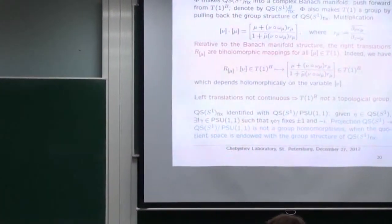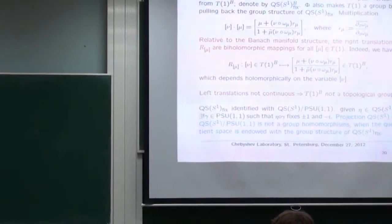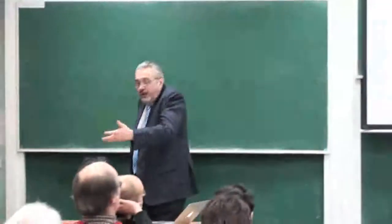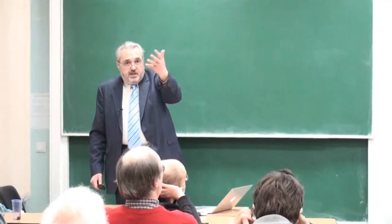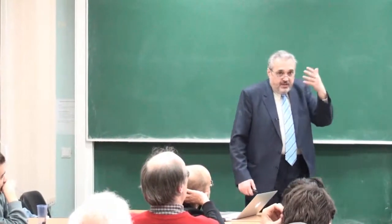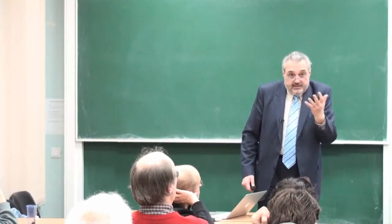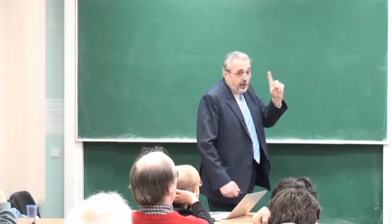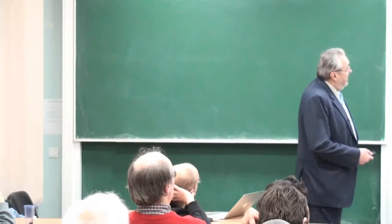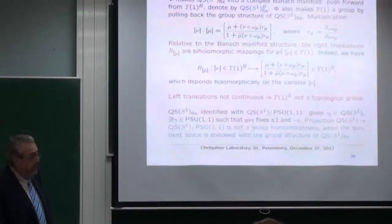Now comes disease number one: this space is sick. Left translations are not even continuous — in other words, this object is not even a topological group. You find this stated in all classical books, even Lecker's Graduate Texts in Mathematics. This is worse than the diffeomorphism group. With the diffeomorphism group in the Fréchet topology you're fine, but in H^s you have a Hilbert manifold and a topological group. Here you don't even have that.